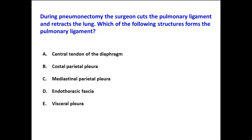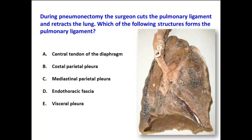During pneumonectomy — that's to say removal of the lung — the surgeon cuts the pulmonary ligament and retracts the lung. Which of the following structures forms the pulmonary ligament? The pulmonary ligament, by definition, is a double fold of mediastinal parietal pleura that hangs below the root of the lung.